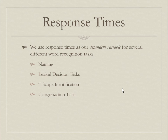So eye tracking explains what the eye is doing. Now we're moving on to output measures — response times — to understand how people access words and their meaning. Then we'll get into what's happening in the brain. Response times are really important, and these tasks come up constantly in language research. We'll talk about naming, lexical decision tasks, T-scope identification, and categorization tasks.